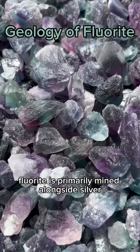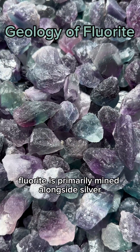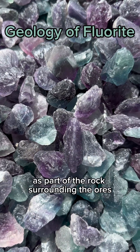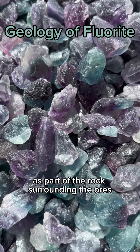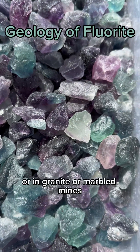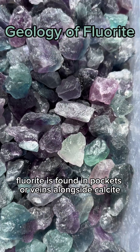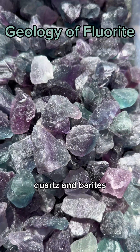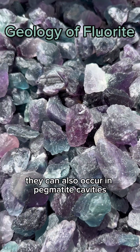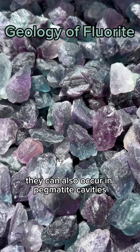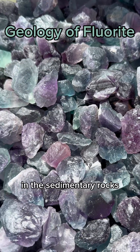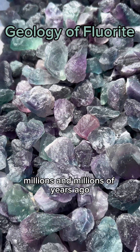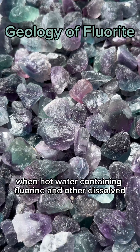Fluorite is primarily mined alongside silver and lead deposits as part of the rock surrounding the ores, or in granite or marble mines. Fluorite is found in pockets or veins alongside calcite, quartz, and barite. They can also occur in pore-type cavities in sedimentary rocks.